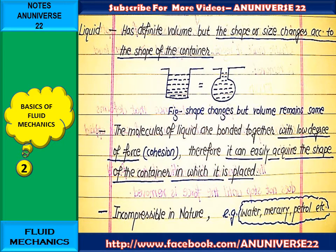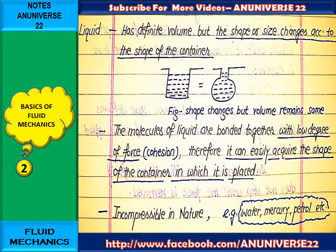Liquid has definite volume, but the shape or size changes according to the shape of the container. As we can see in this figure, the liquid can change its shape according to the shape of the container in both cases. The molecules are bonding together with a low degree of force, that is cohesion. Cohesion is the property of a liquid by which molecules of the same liquid attract each other. And therefore, liquid can easily acquire the shape of the container in which it is placed.